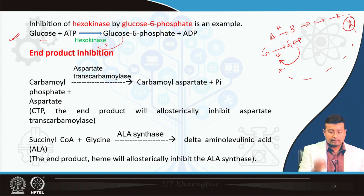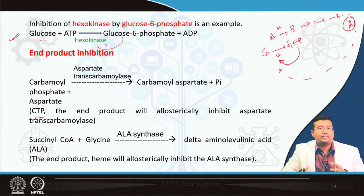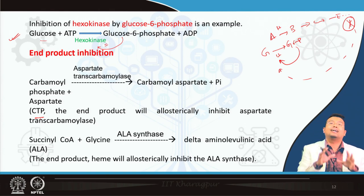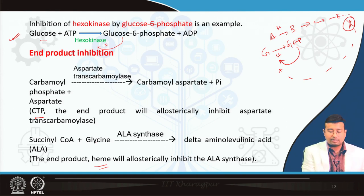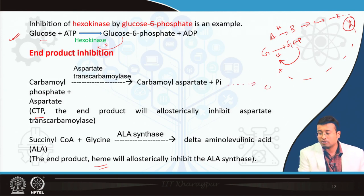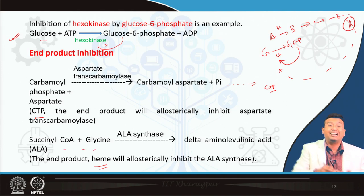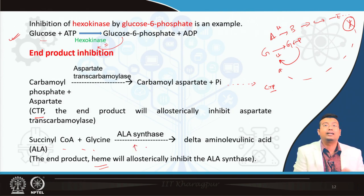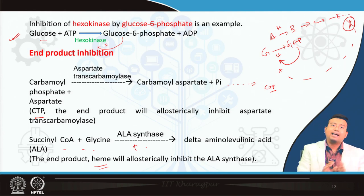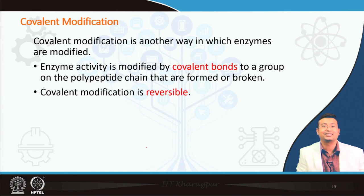An example of end product inhibition: CTP allosterically inhibits the enzyme aspartate transcarbamoylase in pyrimidine metabolism. In heme synthesis, the end product heme inhibits ALA synthase (delta-aminolevulinic acid synthase) — these are the rate-regulating steps. These examples may appear intimidating at the start, but by the end of this course you will be able to answer each and every one of them spontaneously.